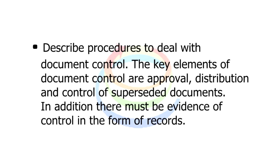Describe procedures to deal with document control. The key elements of document control are approval, distribution, and control of superseded documents. In addition, there must be evidence of control in the form of records.